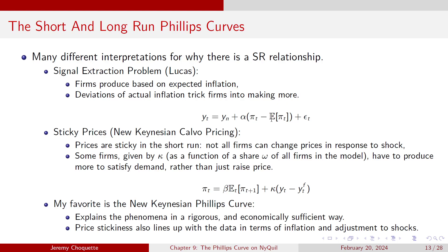If expected inflation is 2% and actual inflation is 3%, that deviation increases output. But it's only that deviation from expectations that matters. If you're expecting 2% but start expecting 3%, then a 3% inflation rate does nothing. It's only when you're consistently expecting 2% that a 3% inflation rate can increase output.